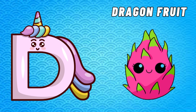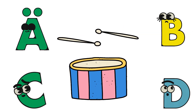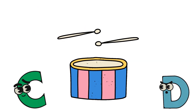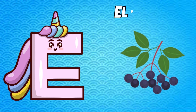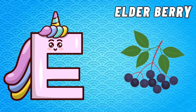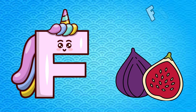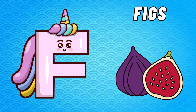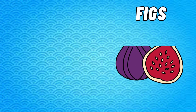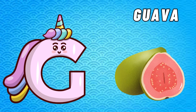E is for Elderberry. F is for Figs. G is for Guava.